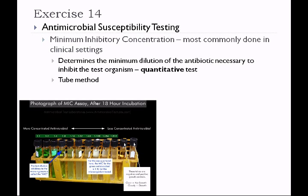Two methods are used for MIC testing. The tube method is time-consuming and not commonly used in clinical labs, but is easy to understand. Dilutions of the antibiotic are prepared in tubes, the test microorganism is added, it is incubated, and then observed for growth — indicated by cloudiness. The last dilution that inhibits the microorganism is the MIC. For the assay pictured, the MIC is 1:8 — that tube is clear, while the 1:16 tube is cloudy.